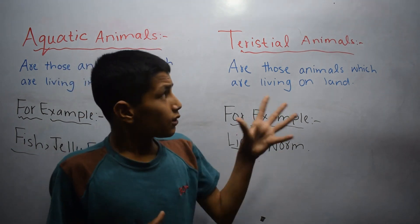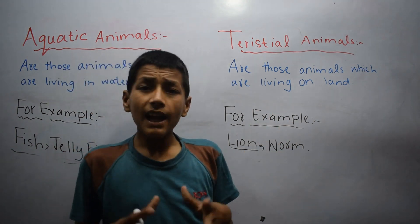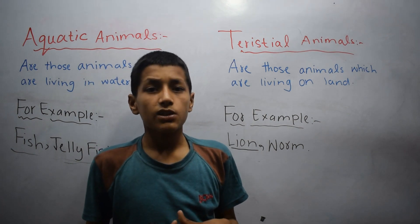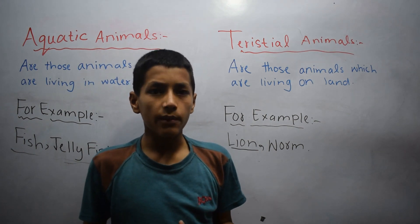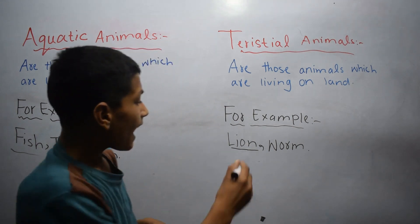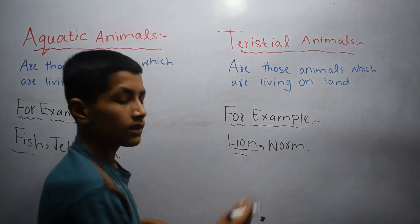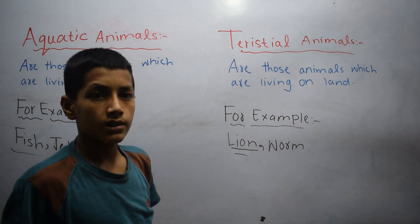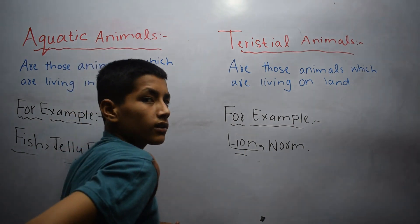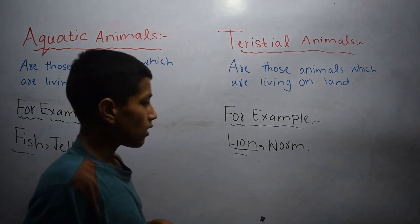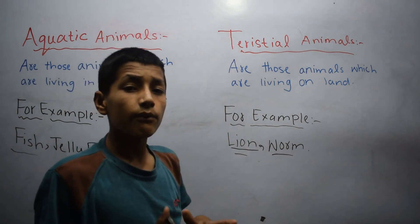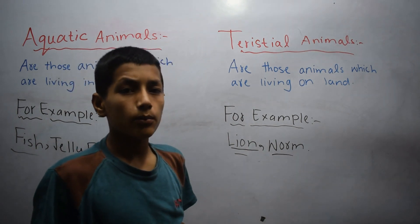Terrestrial animals are also divided into two groups: vertebrate and invertebrate. Lion is vertebrate because lion has a backbone. While worms are invertebrate because worms have no backbone.